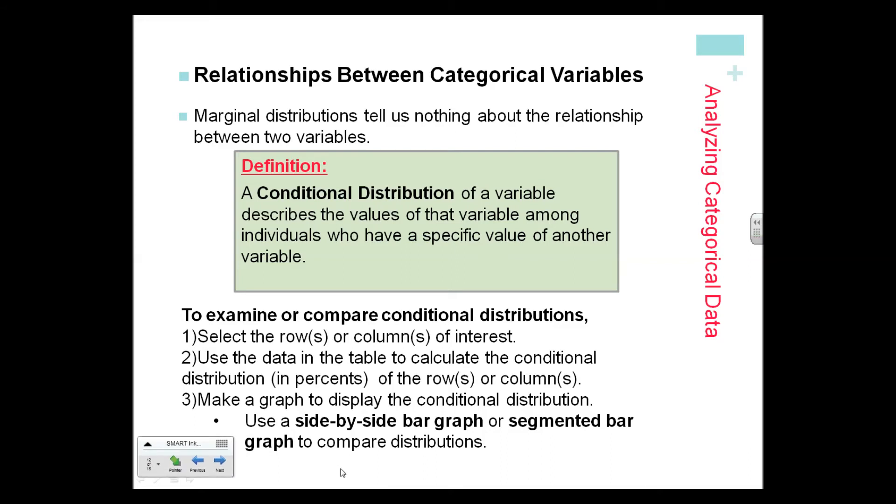We're going to select the row or columns of interest and use the data in the table to calculate the conditional distribution in percents. We're going to make a graph to display it. The two types of graphs are a side-by-side bar graph or a segmented bar graph. You're going to see both of those in your reading, and you can choose either one. Either one is perfectly correct.